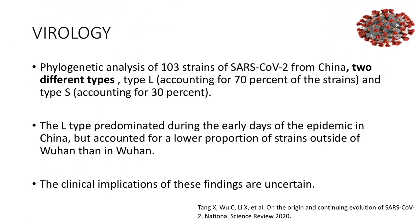Phylogenetic analysis of 103 strains of SARS-CoV-2 from China showed two different strain types. Type L accounts for 70 percent of strains and type S accounts for 30 percent. The L-type predominated during the early days of the epidemic in China but accounted for a lower proportion of strains outside Wuhan. The clinical implications of these findings remain uncertain.